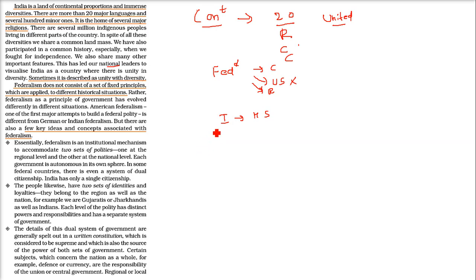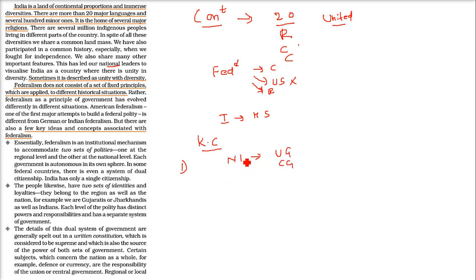There are key concepts associated with the term federalism. The first is that federalism is an institutional mechanism with two sets of governments — one at the national level, which in India we call the union government or central government, for the whole country — and then for each province or state, like Tamil Nadu or Chhattisgarh, we have the regional-level government, called the state government or provincial government. These are two levels.